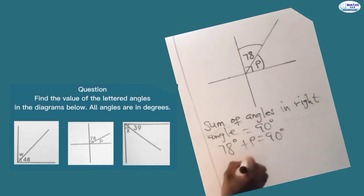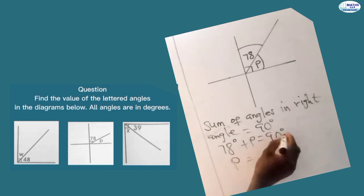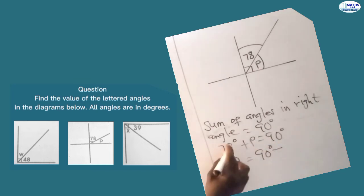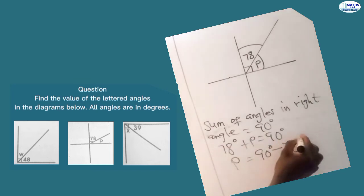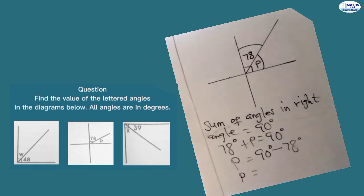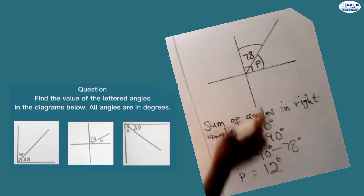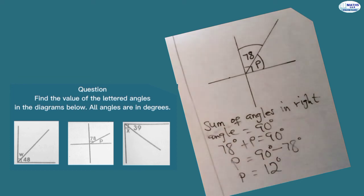Now we make P the subject by grouping like terms: P equals 90 degrees minus 78 degrees. So 90 minus 78 gives us 12 degrees. That means the value for P is 12 degrees.